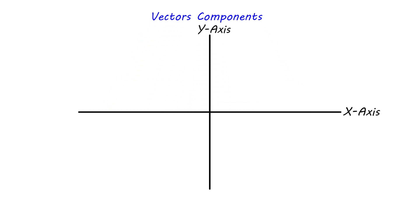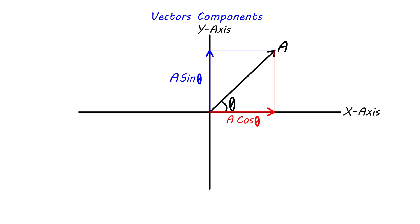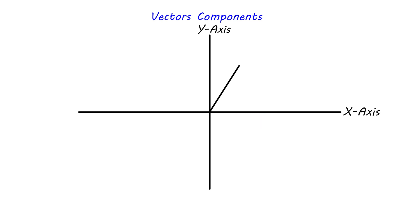When analyzing a vector into its x and y components, the cosine of the angle goes with the component adjacent to the angle, and the sine of the angle goes with the component opposite to the angle. For example, to find the x and y components for vector A with magnitude 50 at an angle of 60 degrees with the x-axis: